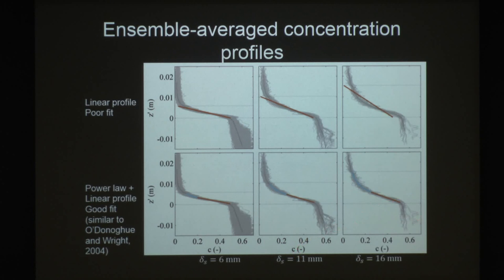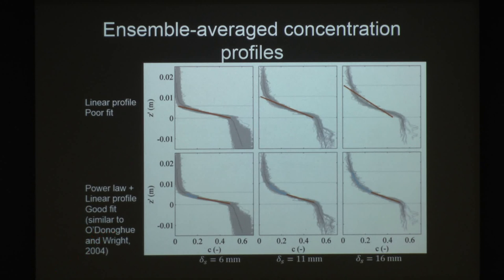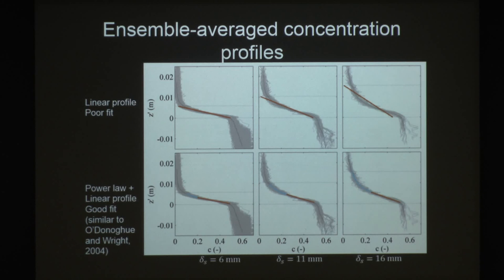For the 11 and 16 millimeter cases, what you see is that for thin sheet layers, linear looks like it's probably okay. But as soon as you get up to the thicker sheet layers, the linear fit is not adequate. So we applied a power law plus a linear fit, similar to a paper by O'Donohue and Wright for oscillatory flow. We can fit the lower portion with the linear profile but need the power law to capture the curvature towards the top, and that does a much better job predicting the shape of the profile.